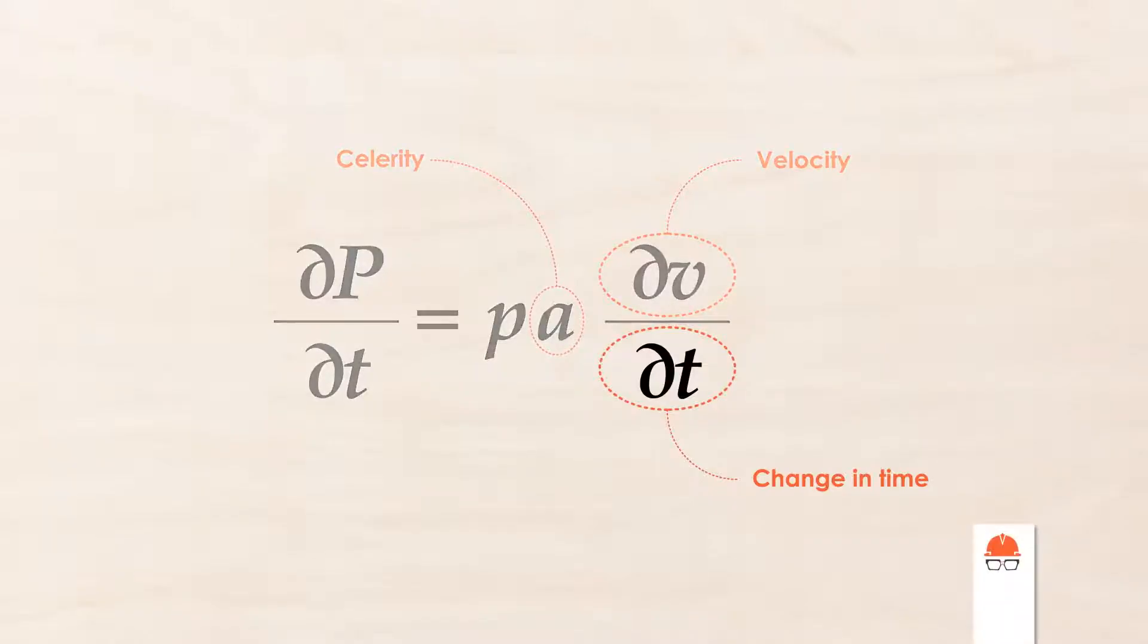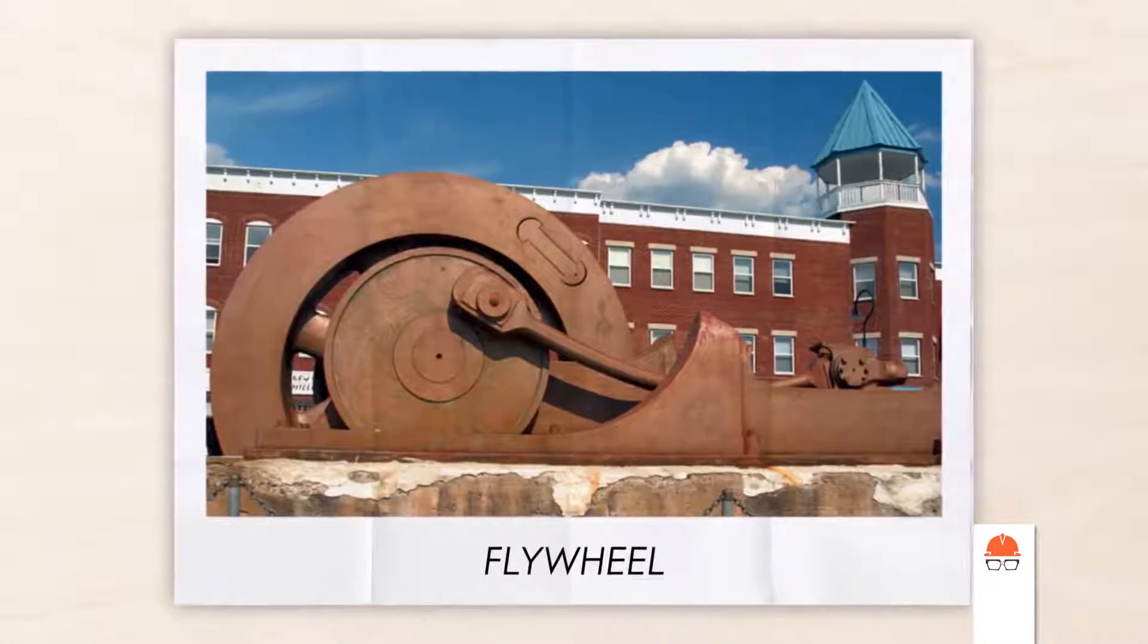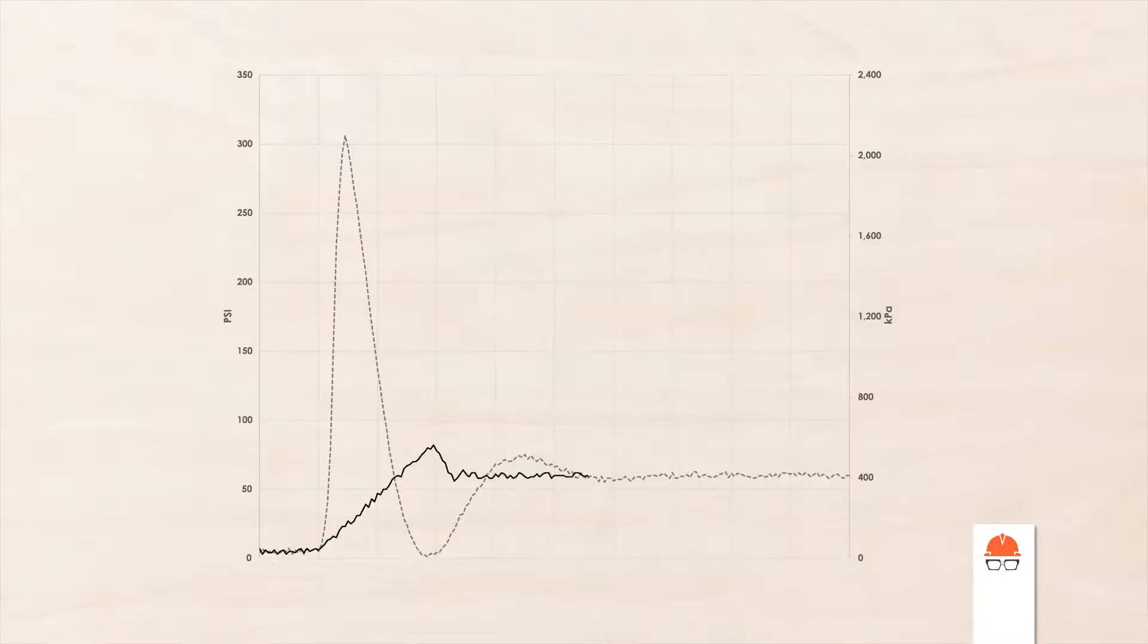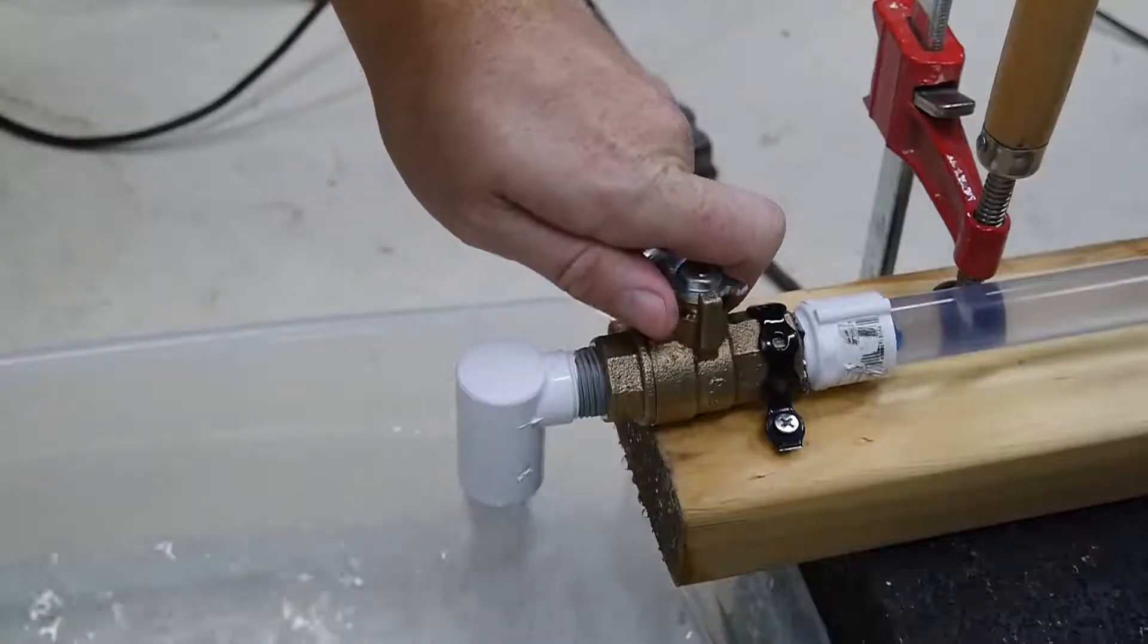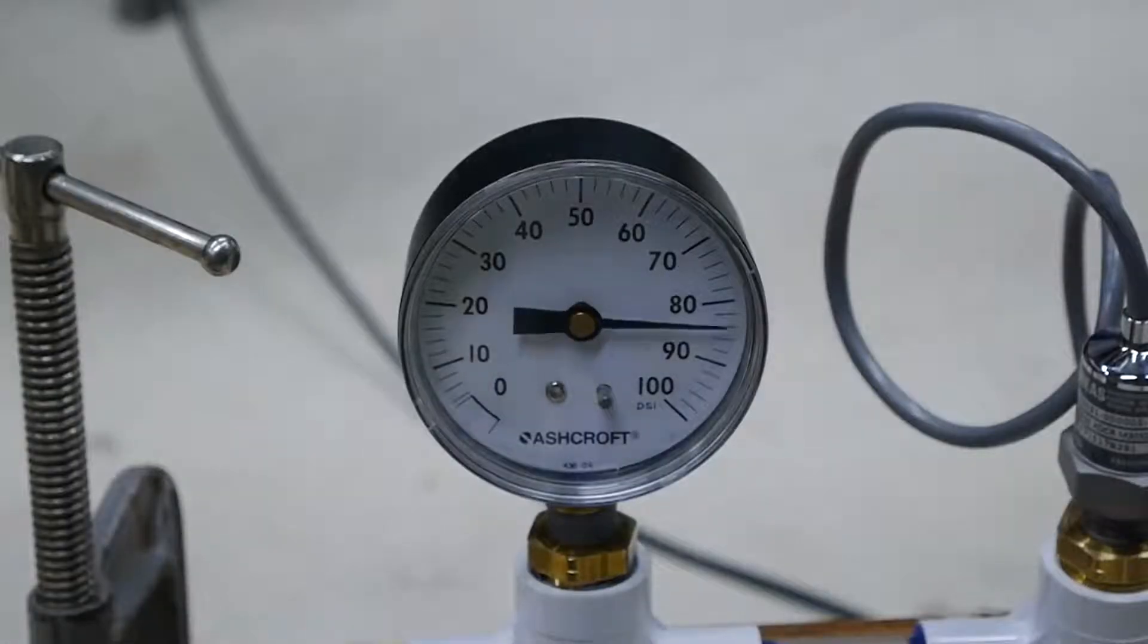Next, you can increase the time over which the change in momentum occurs. One common example of this is adding flywheels to pumps so they spin down more slowly rather than stopping suddenly. Another example is just to close valves more slowly. If I gently shut the valve rather than allowing it to snap shut, the pressure changes are more subtle.